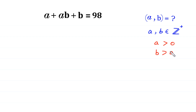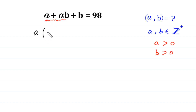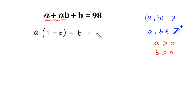From these two terms A plus AB, we can factor out A as a common factor, giving us A times (1 plus B) plus B is equal to 98.